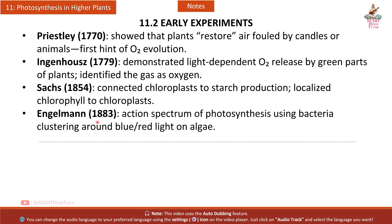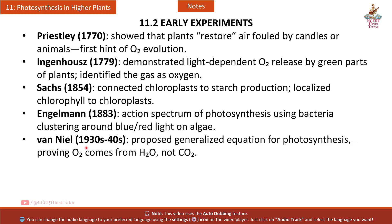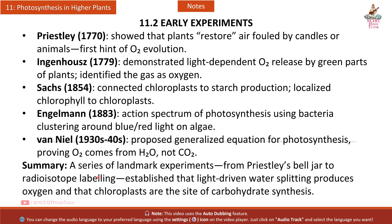Engelmann (1883) mapped the action spectrum of photosynthesis using bacteria clustering around blue and red light on algae. Van Neel (1930s–40s) proposed a generalized equation for photosynthesis, proving O2 comes from H2O, not CO2. A series of landmark experiments from Priestley's bell jar to radioisotope labeling established that light-driven water splitting produces oxygen and that chloroplasts are the site of carbohydrate synthesis.